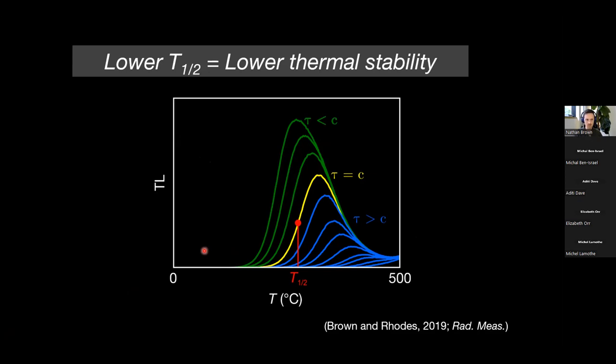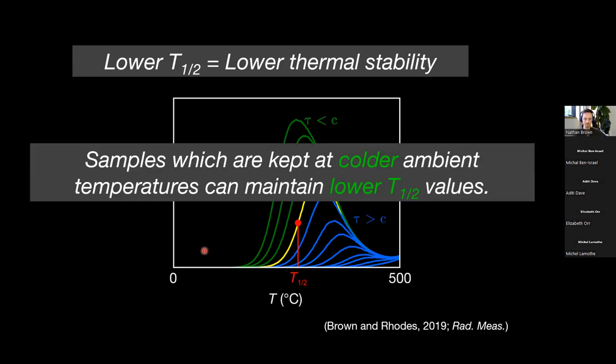In other words, if you observe a lower T half value, you're seeing that less thermally stable sites are occupied. A simpler way to say that is, samples that are kept at colder ambient temperatures can maintain lower T half values.